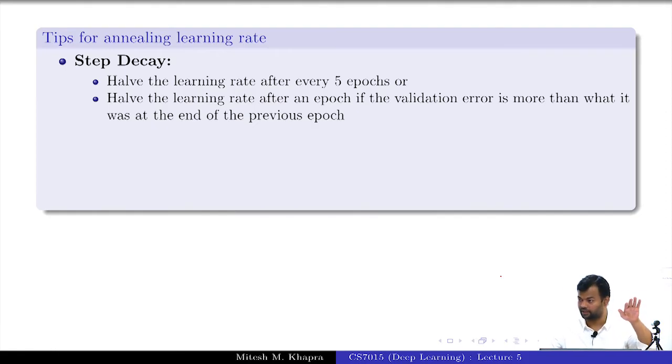You started with some W naught B naught and you have reached to some solution. Keep this solution. Now start with a different initialization. That means you have started from some other point. You started from some other error location and run this algorithm again and see if you reach a different minima. The way you counter this is you just try different stochastic things. You try to start with 10 different initializations, every time reach a minima and then at the end select the lowest possible of these.